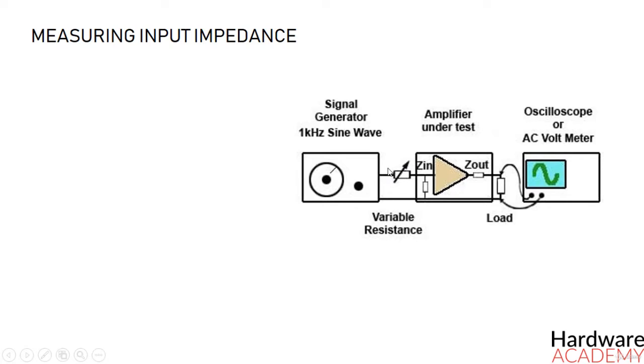The setup for measuring input impedance is illustrated in this figure here. A variable resistor is connected between the signal generator and the amplifier input, and its resistance is set to 0 ohms.